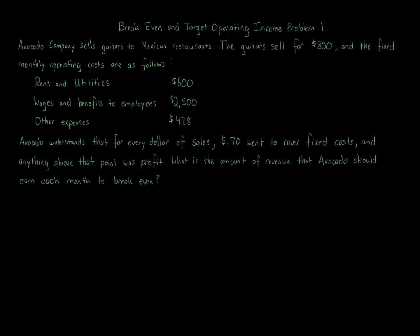Break even and target operating income, problem one. Avocado company sells guitars to Mexican restaurants. The guitars sell for $800, and the fixed monthly operating costs are: rent and utilities $600, wages and benefits to employees $2,500, other expenses $478. Avocado understands that for every dollar of sales, $0.70 went to cover fixed costs and anything above that point was profit. What is the amount of revenue that Avocado should earn each month to break even?